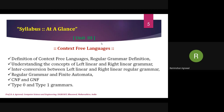Unit 3 is divided into two parts. The first part covers left-linear grammar, right-linear grammar, and their interconversion. The second part covers CNF (Chomsky Normal Form) and GNF (Greibach Normal Form). These terms may appear new, but once we study them in detail you will understand what they are, so there is nothing to panic about.